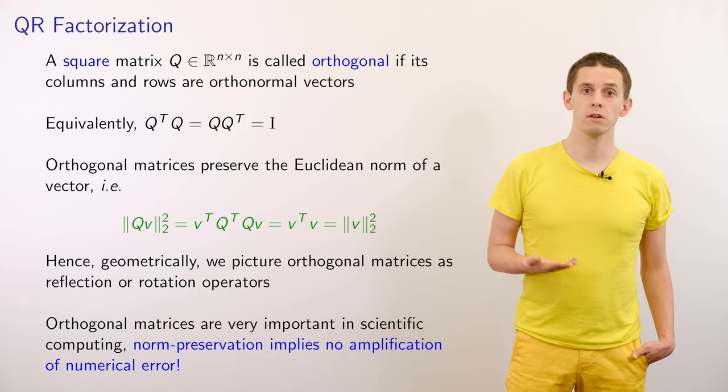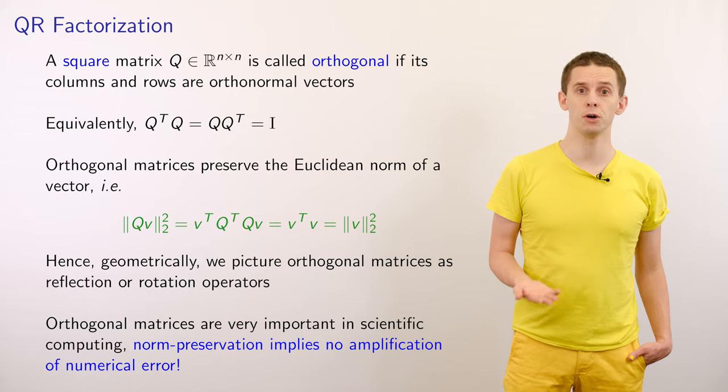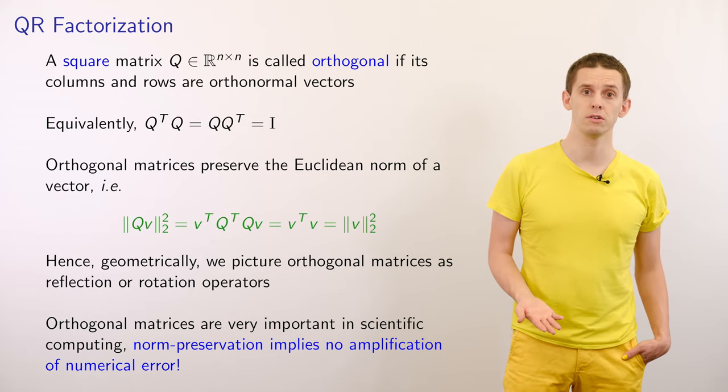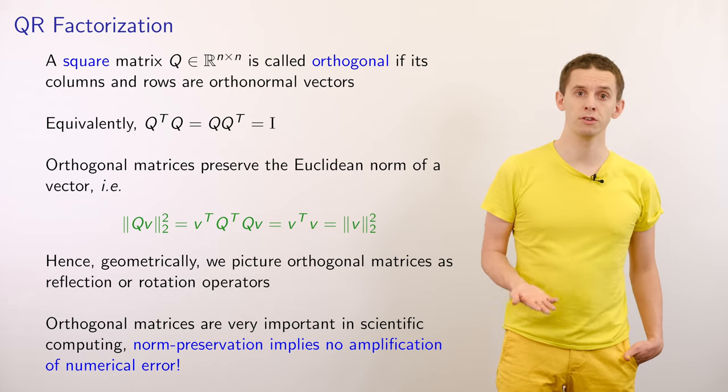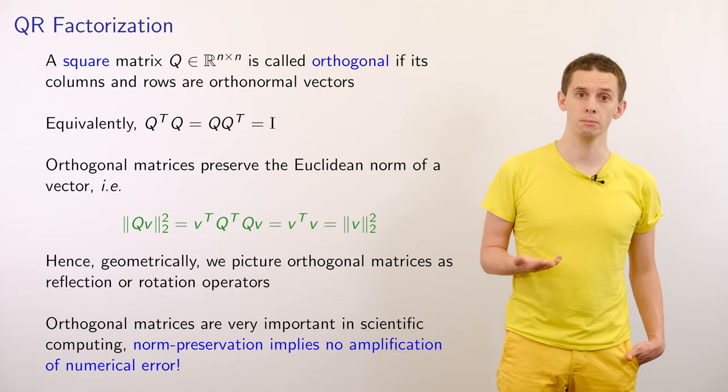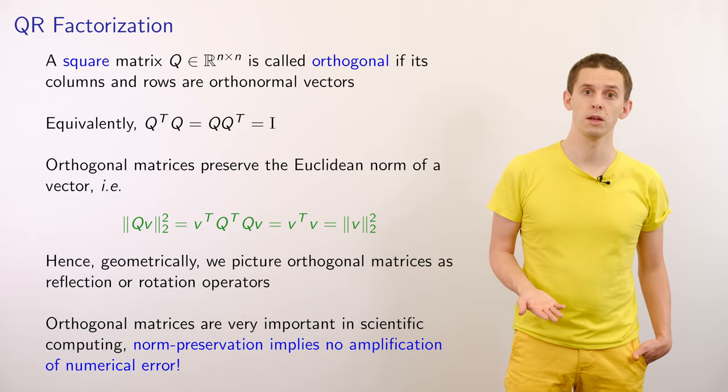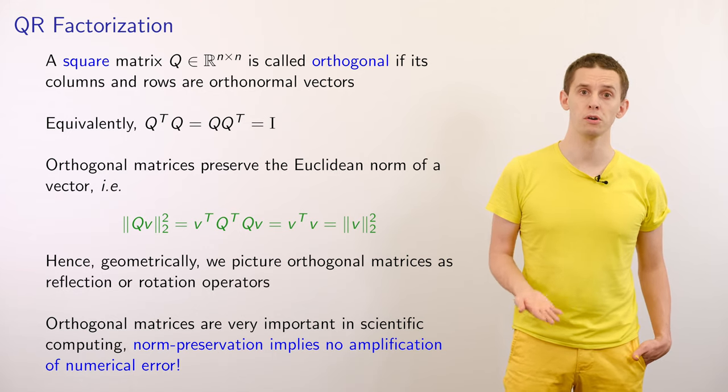Since orthogonal matrices preserve the Euclidean norm, we can think of them as performing transformations that are reflections or rotations. This property that vectors do not change in magnitude is very nice from a scientific computing perspective because it tells us that we don't expect any amplification of error when we use orthogonal matrices.